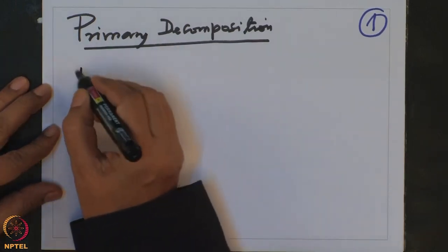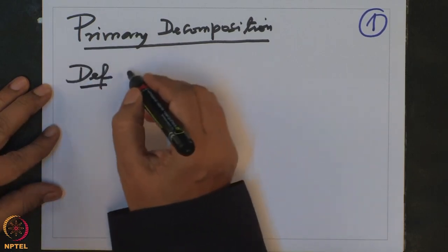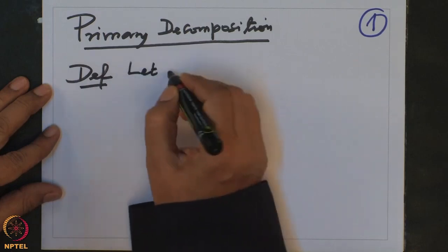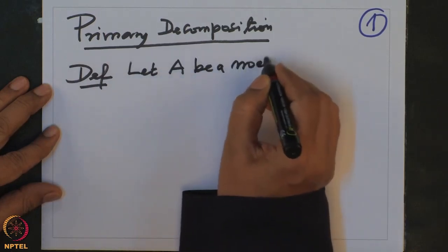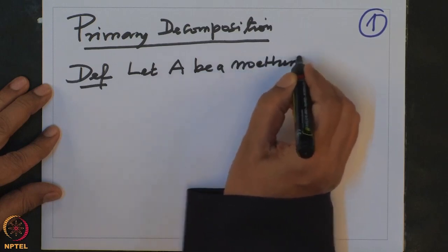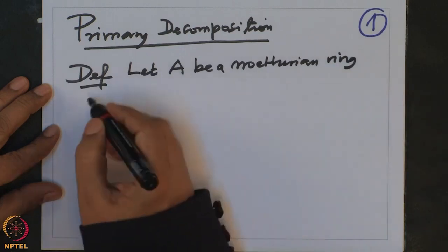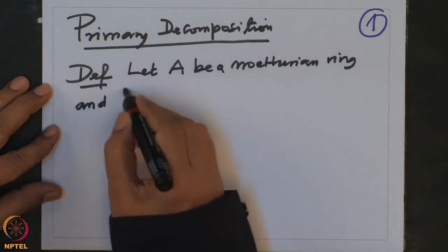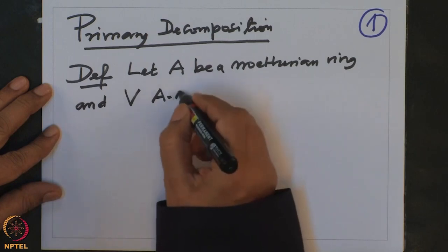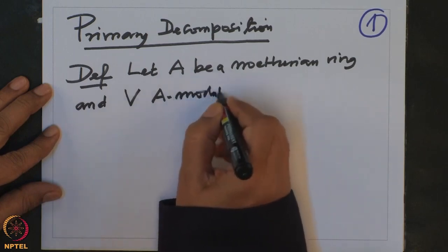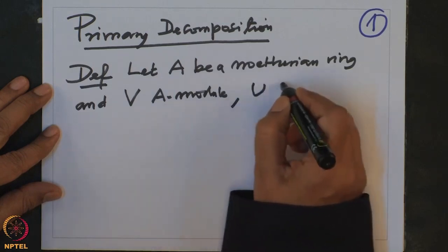So let us first define precisely what it is. Definition: let A be a Noetherian ring, V an A-module, and U a submodule of V.